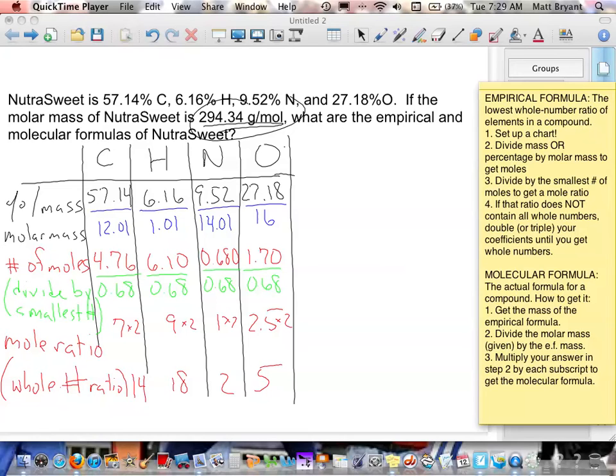Remember that that ratio we get at the end, that whole number ratio, is part of the empirical formula. Because that represents the subscripts in the compound. So, our empirical formula is C14H18N2O5. That is the lowest whole number ratio of atoms in that compound.